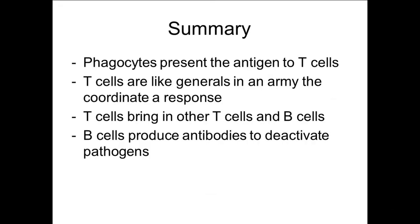In summary: when you get infected by a pathogen, phagocytes encounter it, break it down and digest it, but don't break down the antigen on its surface. They then present that antigen to a type of lymphocyte called a T cell. T cells act like generals in the army, coordinating a response by bringing in the correct type of other white blood cells — namely cytotoxic T cells and B cells. It's the B cells that produce the antibodies. In the next video, we'll be looking at how antibodies work and the next stages in immune responses.